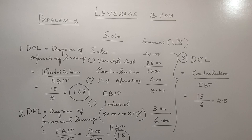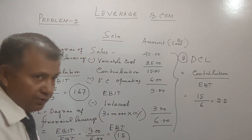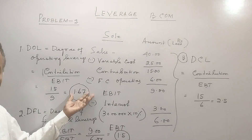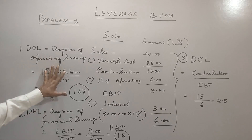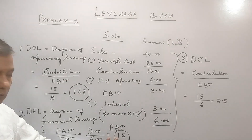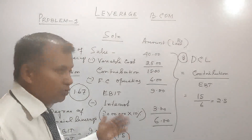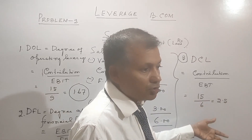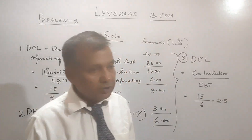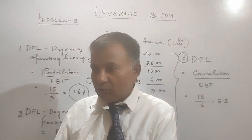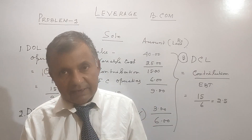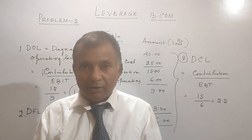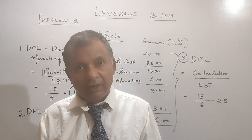Friends, in this problem they have not asked you to comment. However, DOL is 1.67 which is less than 2, so operating risk is moderate. DFL is 1.5 which is also less than 2, so financial risk is also moderate. And DCL is 2.5 which is less than 3, so it is also considered moderate. You can go through the question with answer provided. We will go to problem number 3 in the next class.